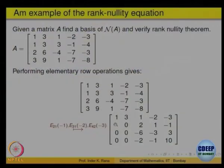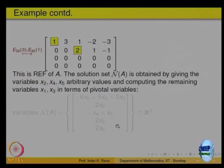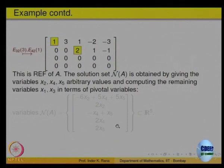Either way, first of all we have to reduce the matrix to row echelon form. Let us do that. I have written down the operations. In the result shown in the yellow box, there are only 2 non-zero rows. So what is the rank of this matrix? The rank is 2 — that is the number of non-zero rows.